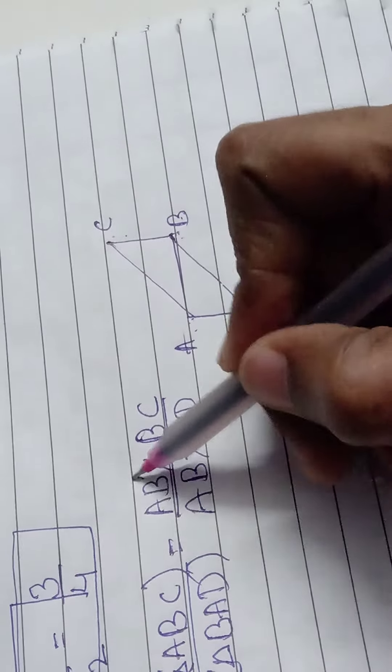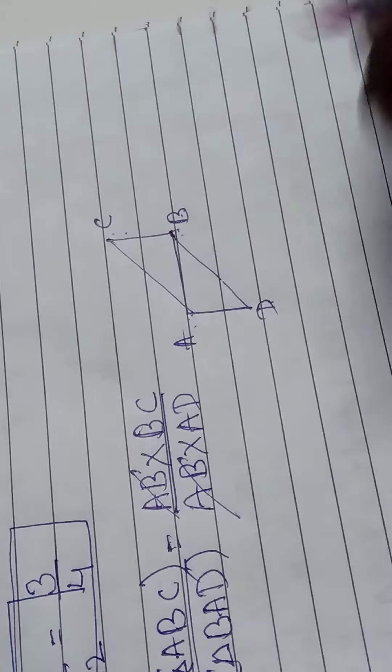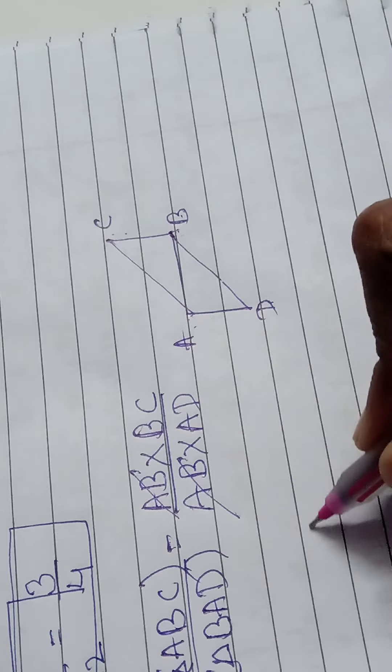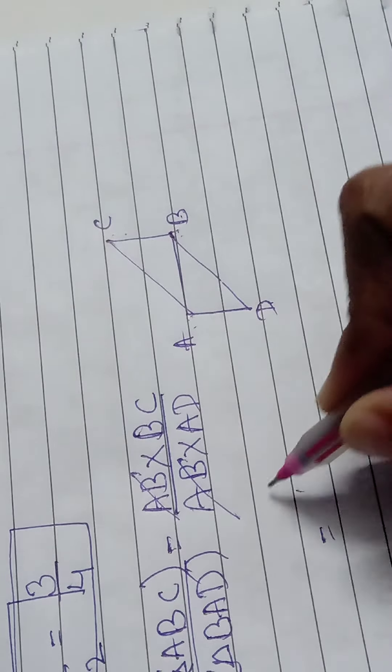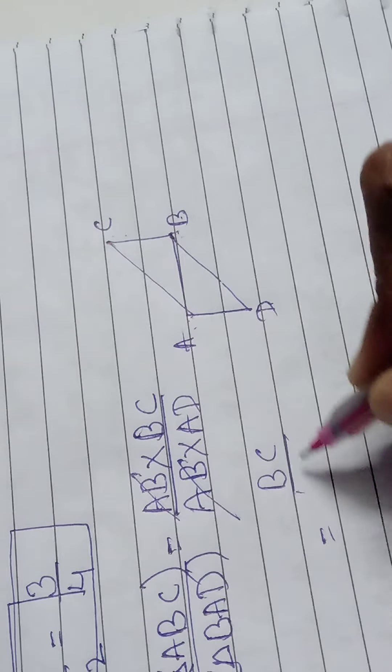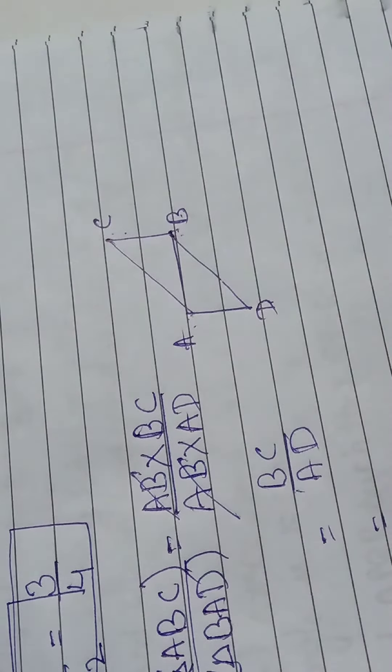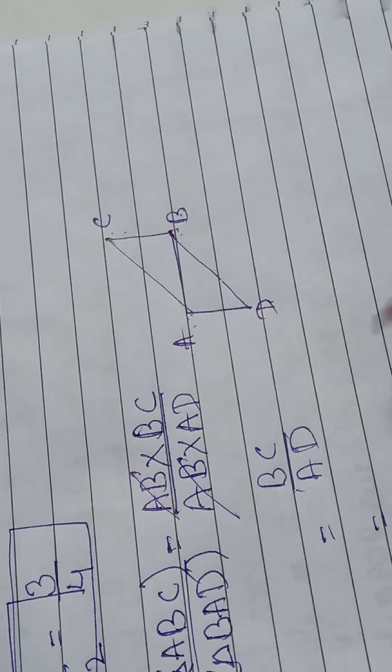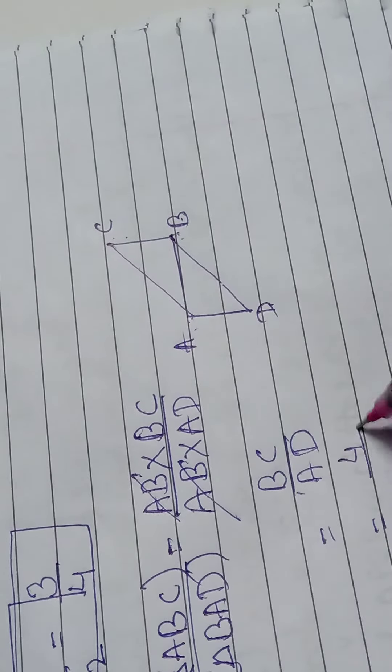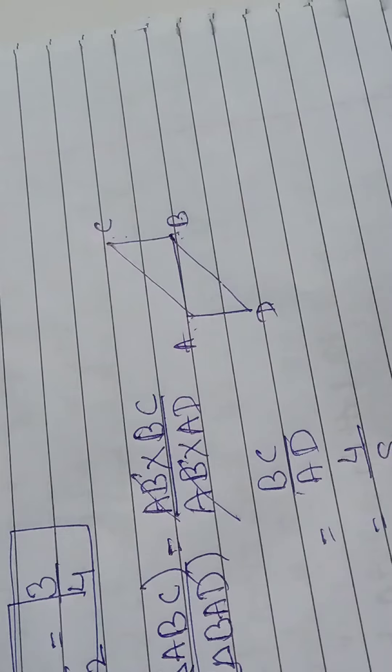Now base AB and AB both are common, so we will cancel AB. So what is the value? BC upon AD. Now in the question, what is the value of BC? It is 4 and value of AD is 8.